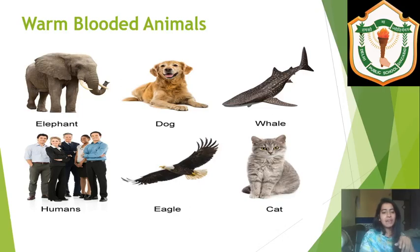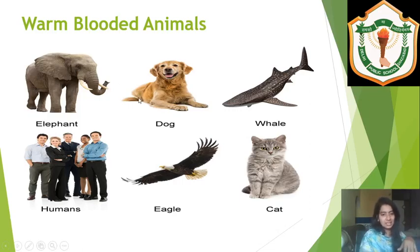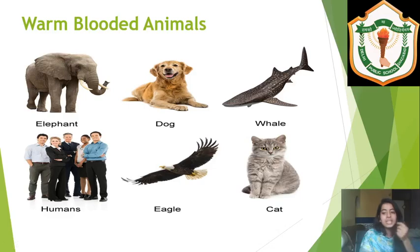Firstly, their skin is covered with hair or fur — as seen in dogs and cats — and birds have feathers on their body. All this fur, feathers, or hair provides insulation, which is why their body temperature remains maintained and they don't feel extremely cold or extremely hot.